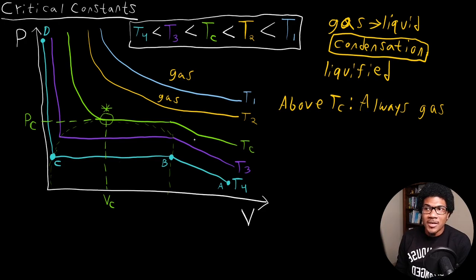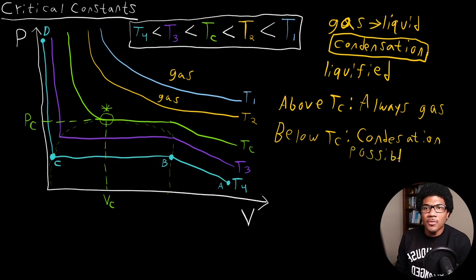Now for TC, it's a little bit different. And below TC, we have different possibilities where you can actually have condensation. So below TC condensation is possible. So since we can have condensation below that point, we're not necessarily dealing with a gas the entire way. And you can tell that because this isotherm looks extremely different from these gas isotherms at the top.